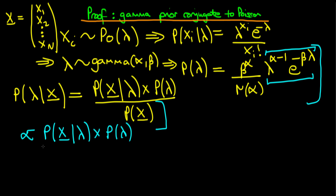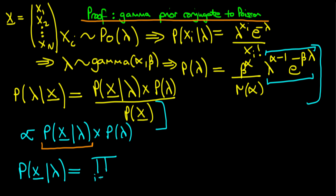So let's write down each of these bits in turn. First of all, we'd like to work out the likelihood for a number of observations. We're going to write that the probability of our vector of observations x given lambda — assuming we have a random sample of exchangeable, independent observations — can be written as the product from i equals one to n of lambda to the power xi times e to the power minus lambda, all divided through by xi factorial.